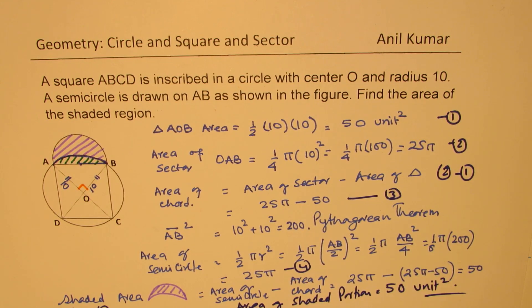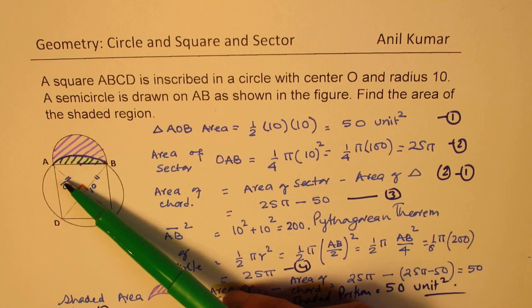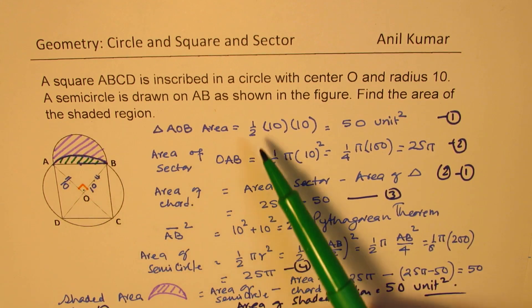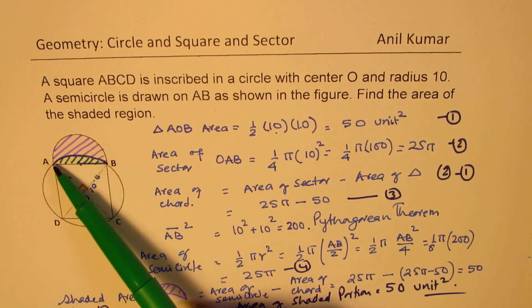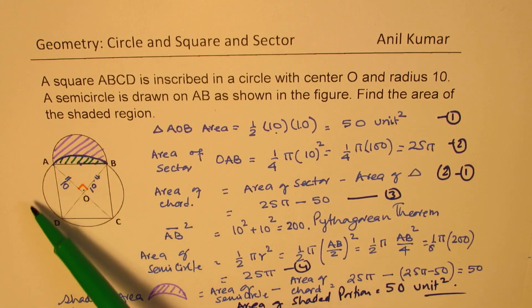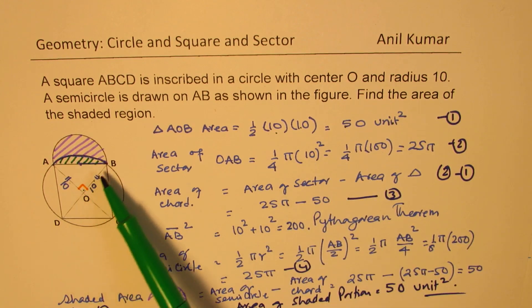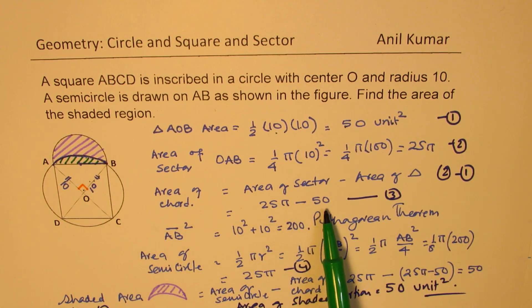So we have used very standard formulas to solve this question. So initially, since we know that the radius is 10, we have an isosceles right triangle. Base and height, both are 10 and 10. Area will be half base into height, 50 units squared. Area of the sector is one-fourth area of the whole circle, 25π. Area of chord is difference of these two.